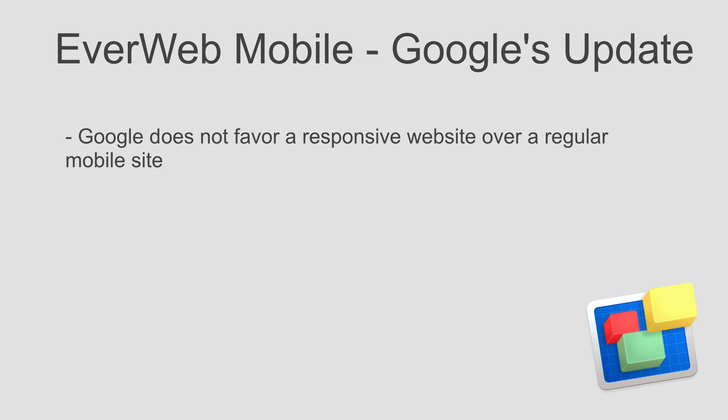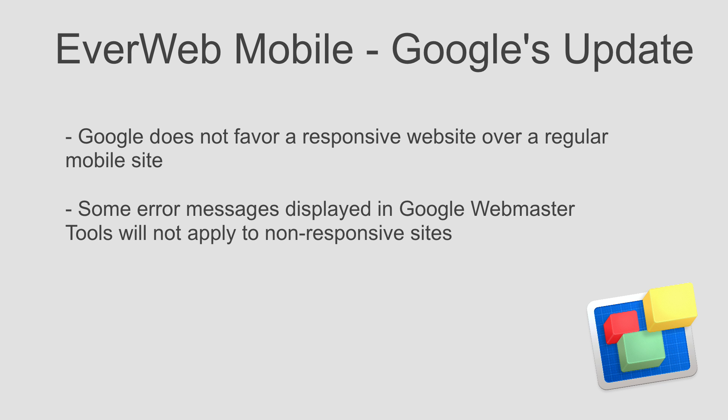If you use Google Webmaster Tools, you may see some error messages given by Google. Make sure to not take some of these error messages too seriously. For example, one message you might see is that the viewport is not set correctly. This is not necessary to do in EverWeb, so you can just ignore it. This will not negatively affect your mobile site's rankings.